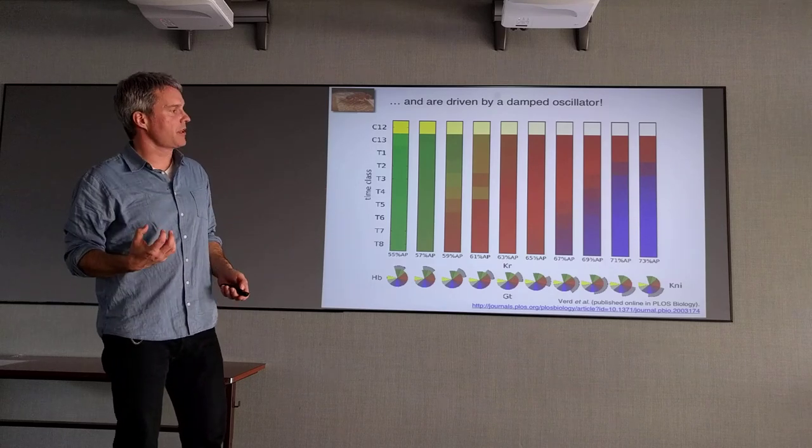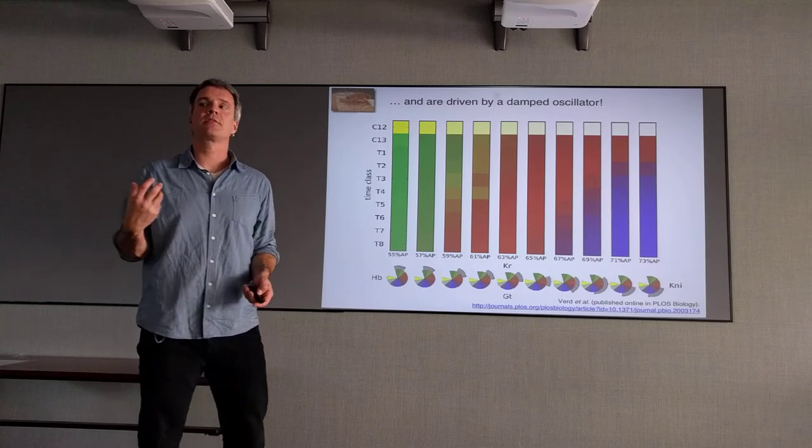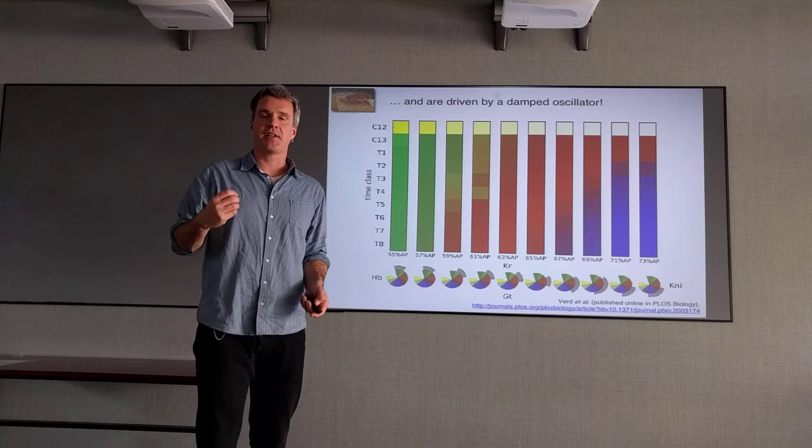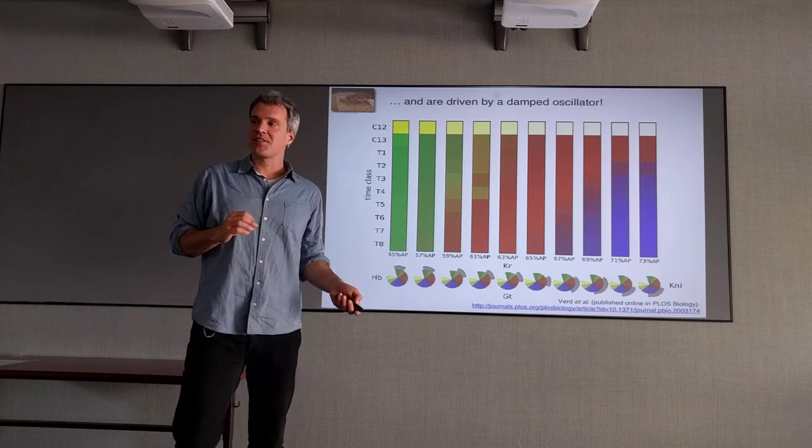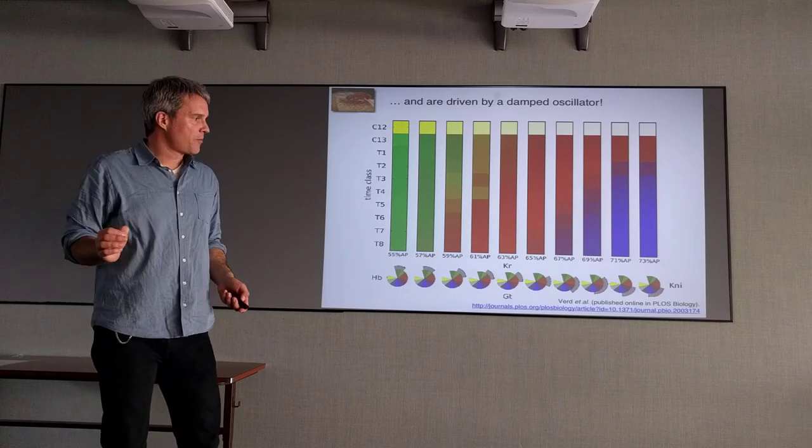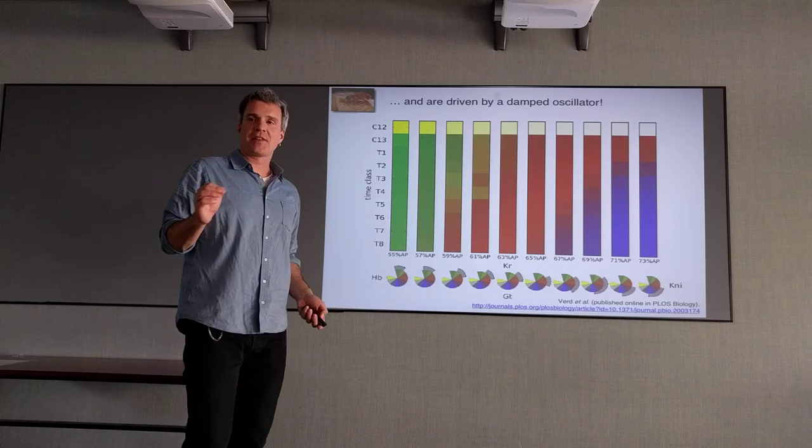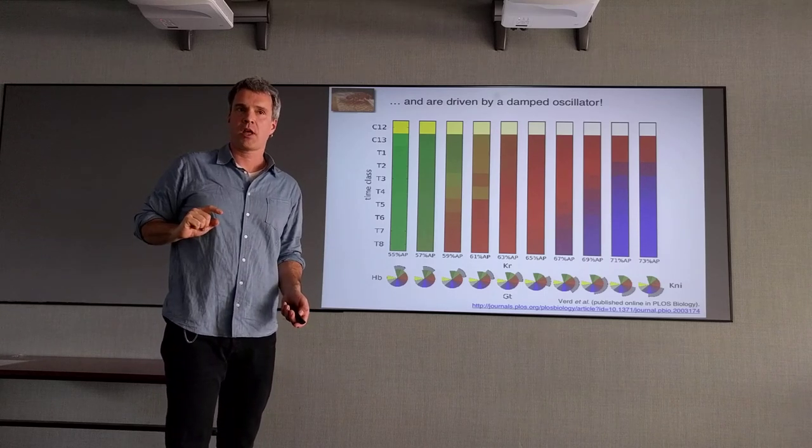This is just the definition, the mathematical definition of an oscillator. Nothing oscillates. Nothing repeats. But the underlying mechanism is still an oscillator. It's just very damped. It's in a very damped limit. It's like a clock that is never able to finish one complete hour.